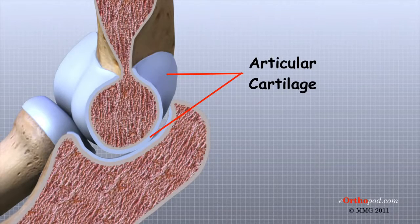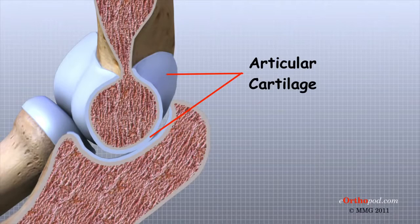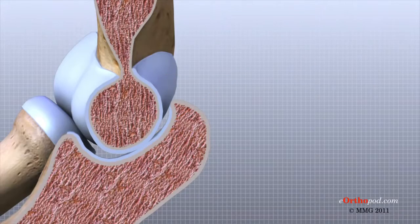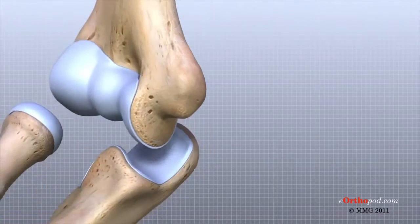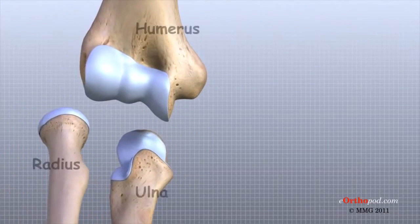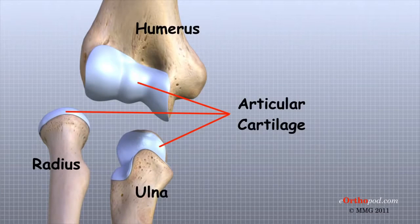Articular cartilage functions to absorb shock and provide an extremely smooth surface to make motion easier. It is slippery, which allows the joint surfaces to slide against one another without causing any damage. We have articular cartilage essentially everywhere that two bony surfaces move against one another, or articulate. In the elbow, articular cartilage covers the end of the humerus, the end of the radius, and the end of the ulna.